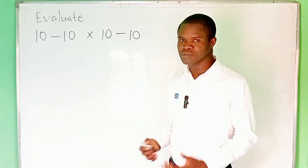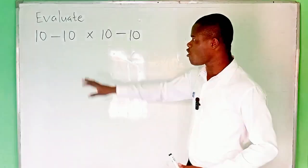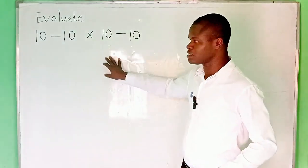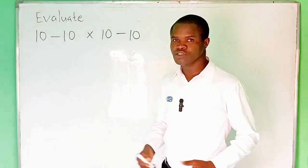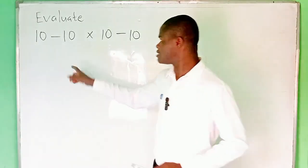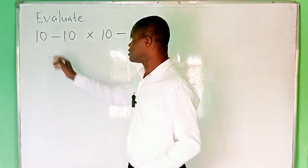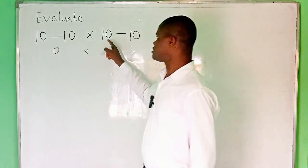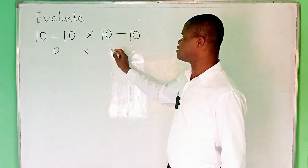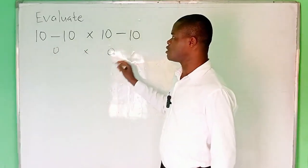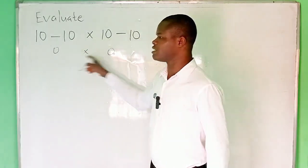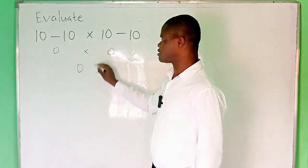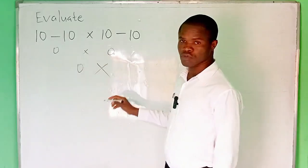Many students make the mistake of whenever they see a problem like this, they are hasty to conclude that this is 10 minus 10 is 0, and 10 minus 10 is 0, so 0 times 0 is 0.